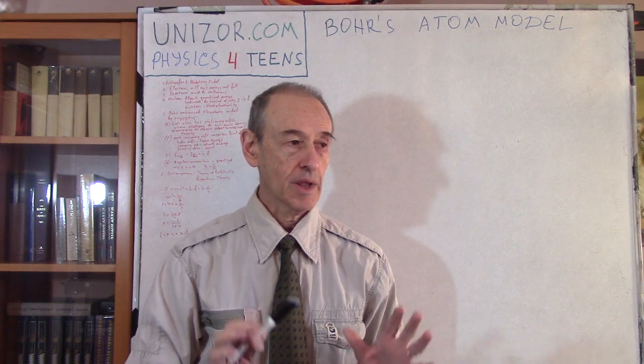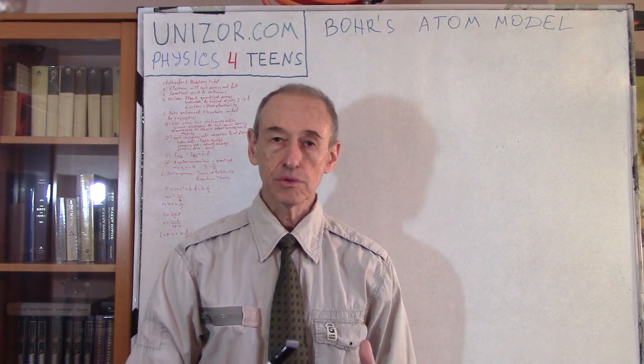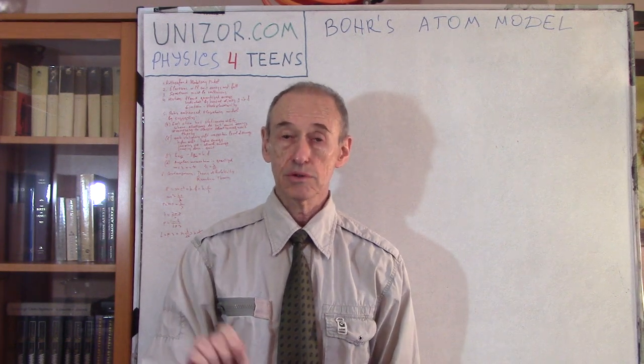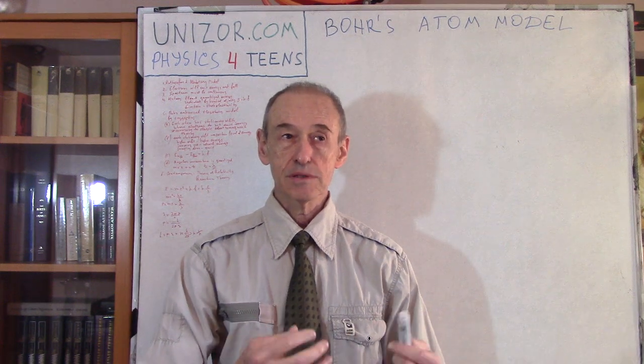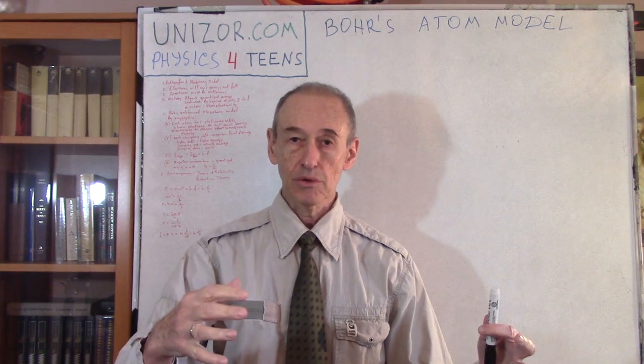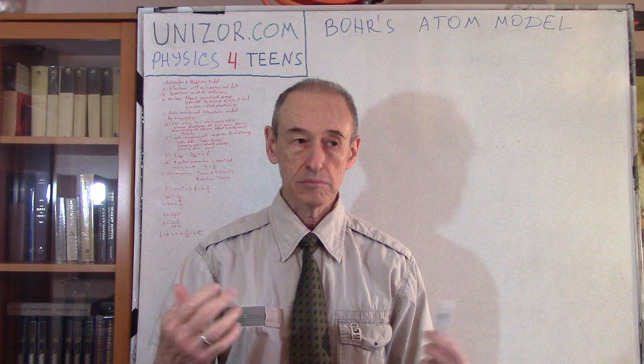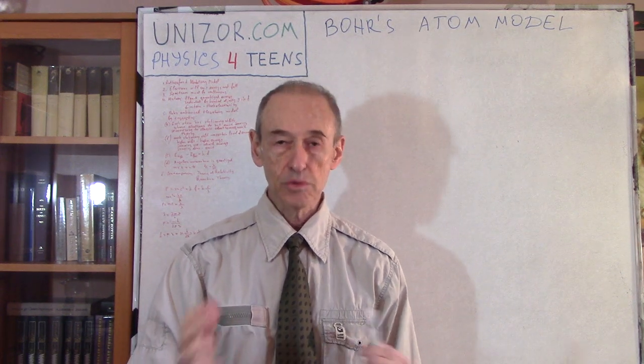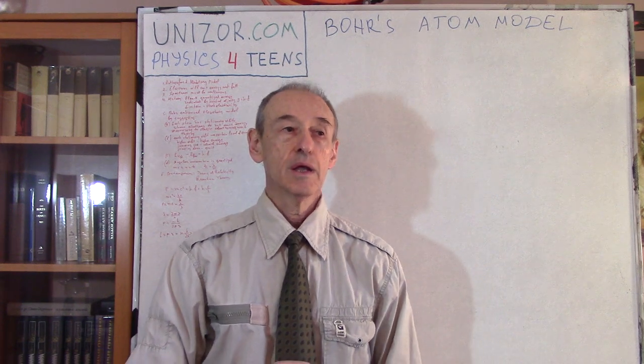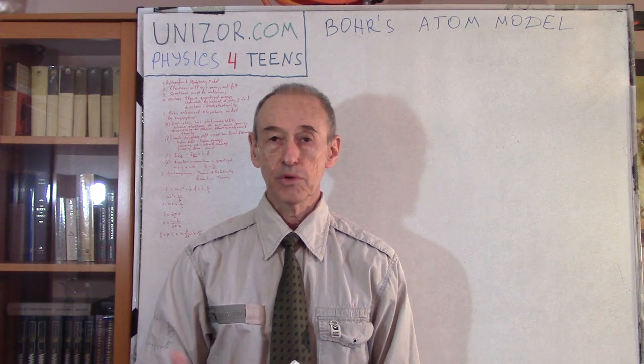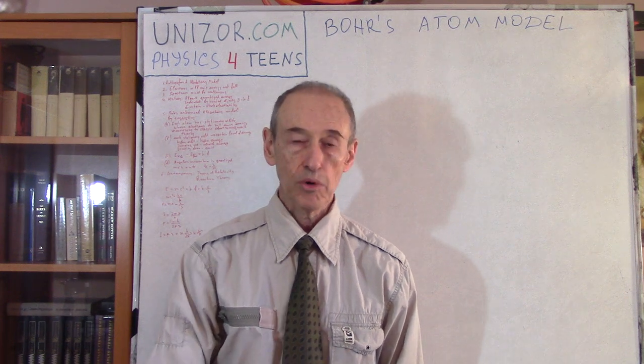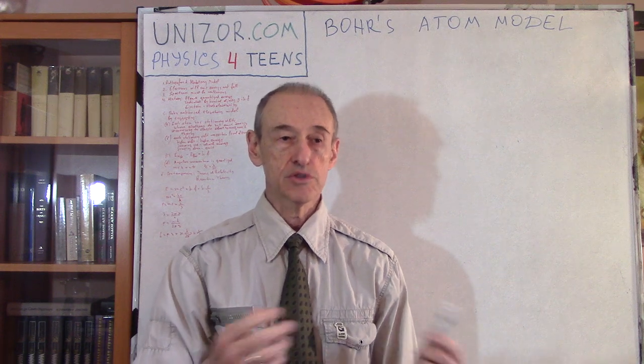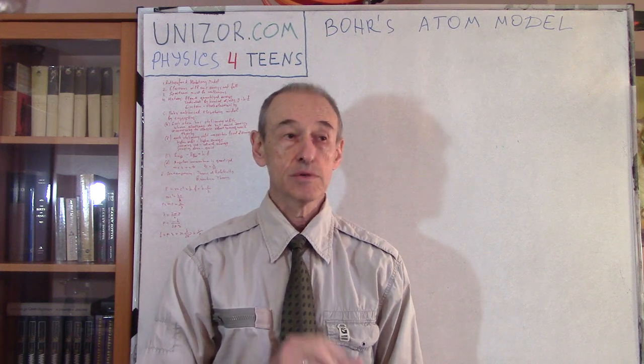So we needed to correct this planetary model, not to completely reject it, because the structure of nucleus and electrons around it was kind of beneficial for physics. It looks like it was experimentally proven. So how can we improve this?